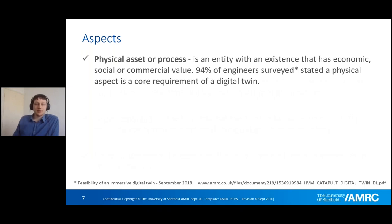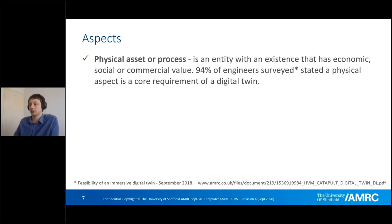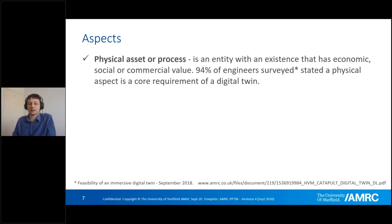The fourth requirement is to have something physical existing — the asset or process. This is coming back through research we did in 2018; the AMRC has been saying for a long time that you must have something physical that you're wanting to have a Digital Twin of. Otherwise, what's the difference between that and just a simulation? What we're saying is there must be something tangible to have value — economic value, social value, or commercial value.